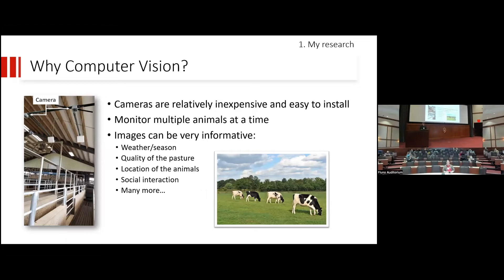Also, when compared to other types of sensors, image data can be very informative. You not only see the trait that you're interested in, like here, for example, checking whether the cows are eating or not. But you can also, from the same image, extract information later about the weather, about the quality of the pasture, how green it is, and also the localization of the animals and social interactions and many others, as long as your creativity goes.